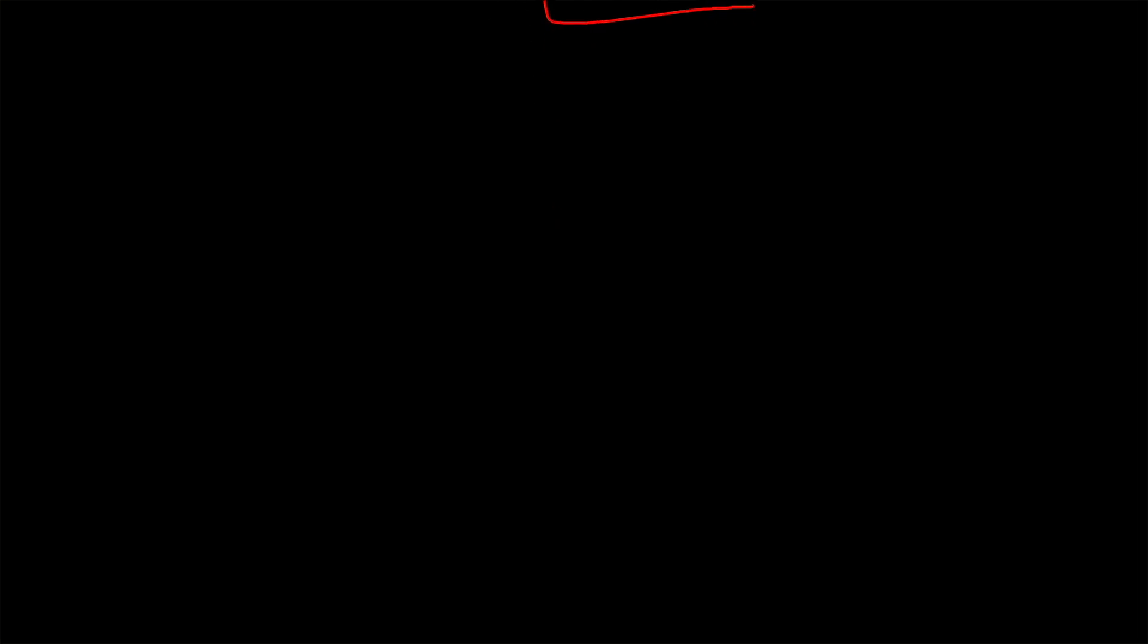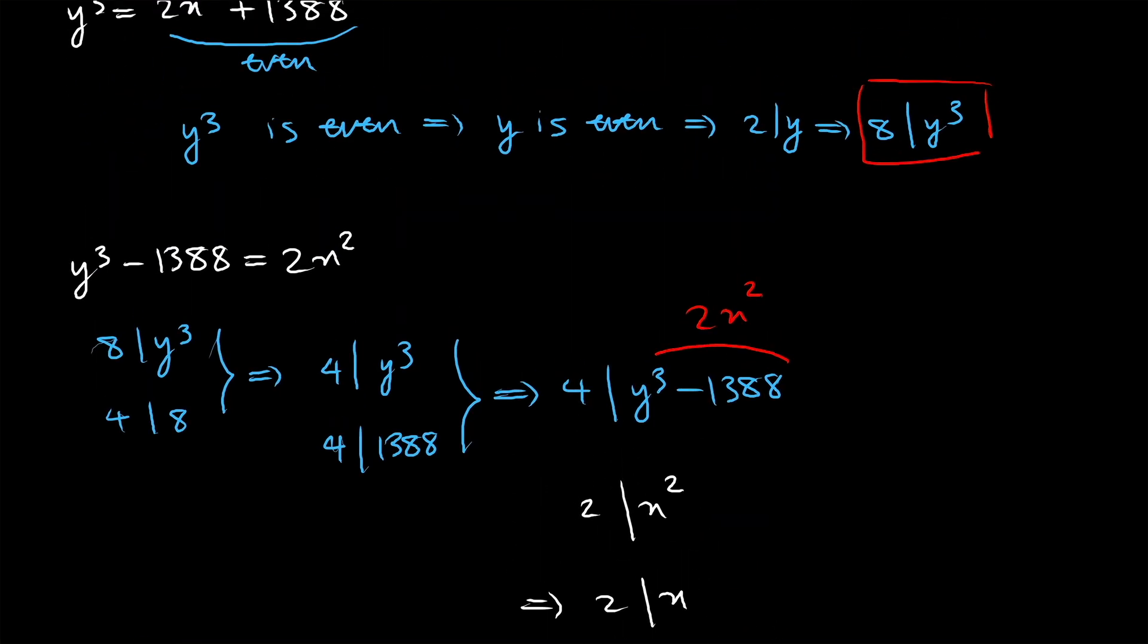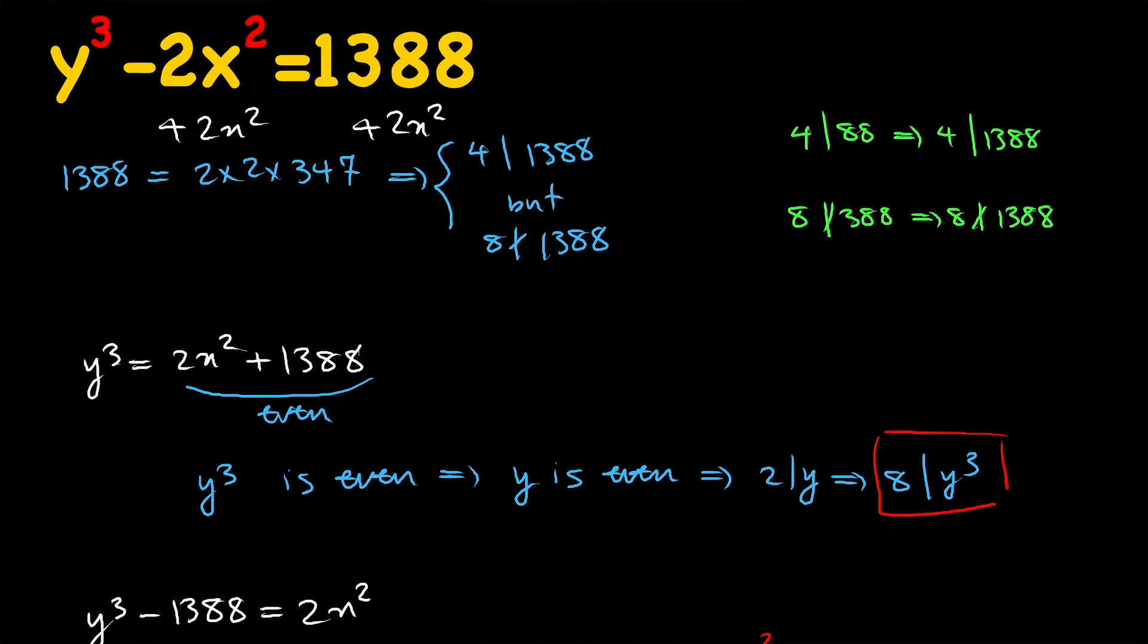So we have found out that 8 divides y cubed, 8 divides 2x squared, but 8 does not divide 1388. So we can put these two together and say that 8 divides y cubed minus 2x squared and if you look back we can see that y cubed minus 2x squared is actually 1388.